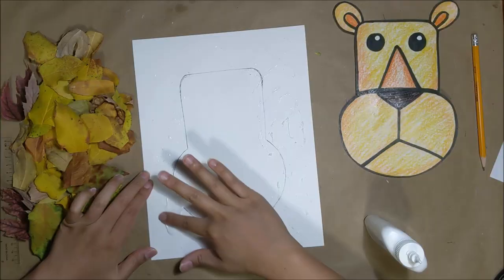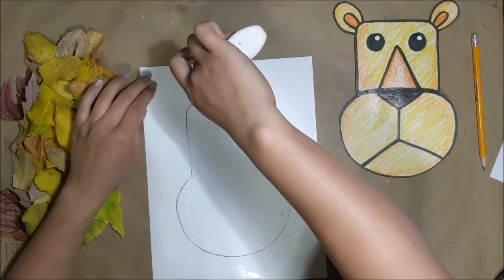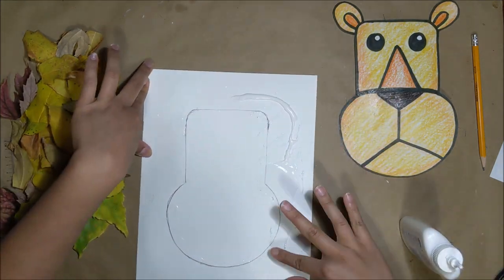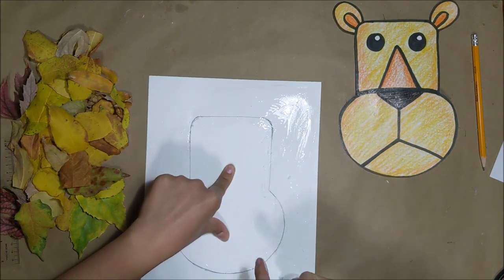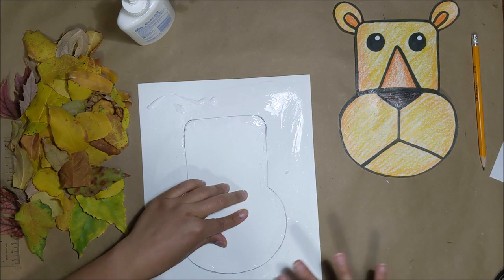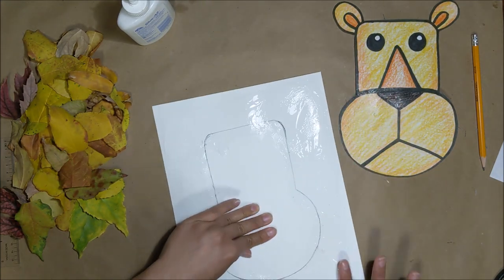To prepare our paper we need to add glue all around the shape. I'm not afraid to get dirty so I'm just using my fingers. You can use any other tools to spread the glue all around. We just need the glue to be flat and smooth on the paper.